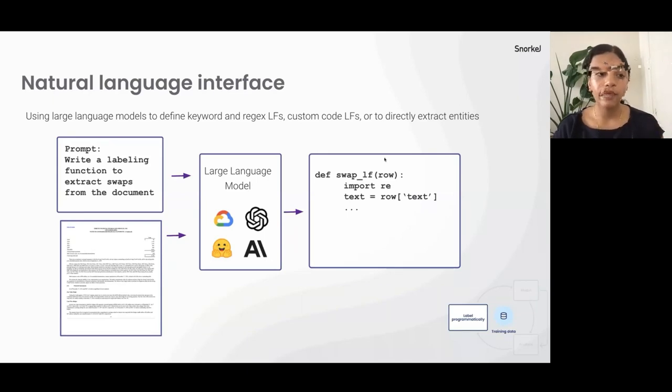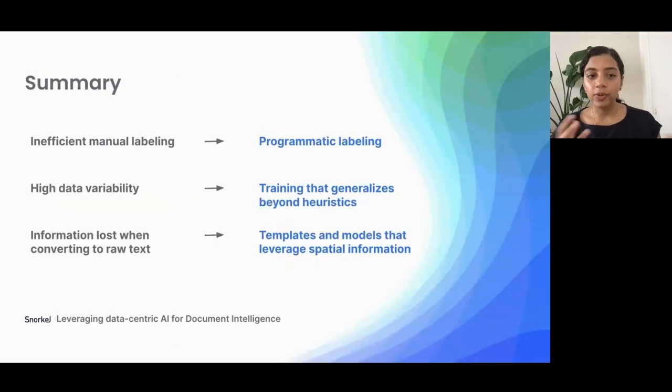So you can use large language models to define keyword or regular expression based LFs. You can use it to define your own custom code LFs, where we provide our internal templates in the context, or you can use it to directly extract out entities from these documents. For example, in the same interest rate swap example, you could say, write a labeling function to extract swaps from this document, provide a template to this model, and it will provide a code example that you could use to label your own data. We've integrated with really common large language model providers, both with closed APIs and open source models here.